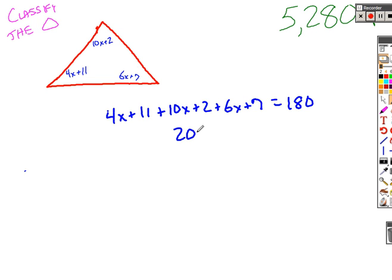From there, it's just simplifying. It ends up being 20x plus 20 equals 180. So 20x equals 160, and you should get x equals 8.